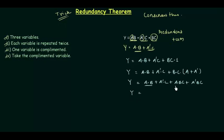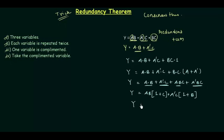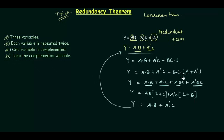Now you can see a·b is common in two terms, so taking a·b as common leaves us with 1. And a-complement·c is common in the other two terms, so taking a-complement·c as common also leaves us with 1 plus b. Since anything OR'd with 1 gives 1, we get y = a·b or a-complement·c. This is what we got from the redundancy theorem — we omit the term in which the complemented variable is not present. This is the proof.